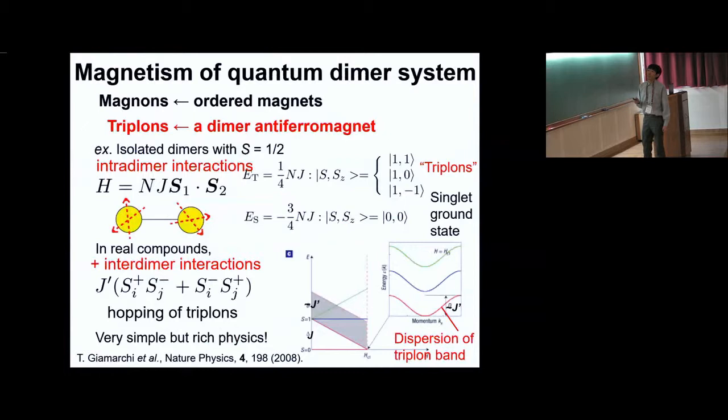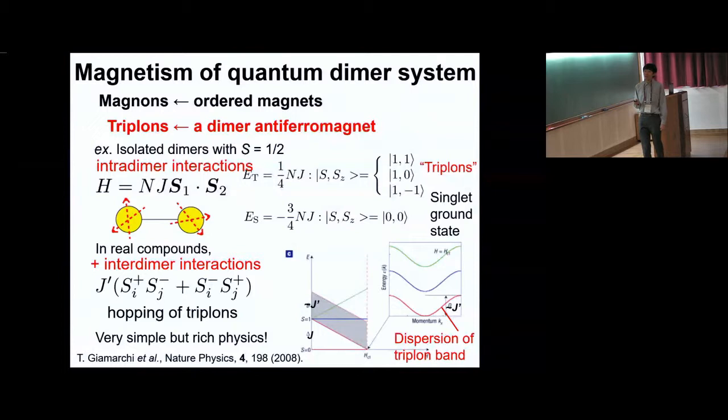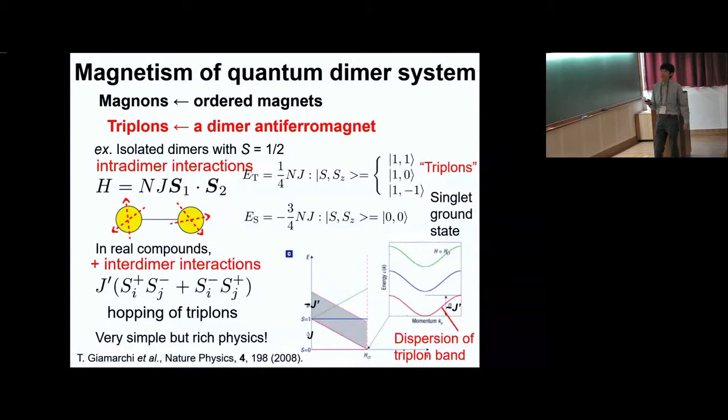Along this line, not only magnons but triplons can be useful for realizing a bosonic topological insulator. Magnons are defined in magnetically ordered systems, while triplons are defined in dimer antiferromagnets with a singlet ground state. The simplest example is isolated dimers with spin one-half. We can easily derive the ground state wave function and eigenenergies, leading to a singlet ground state and triply degenerate excitations: triplons.